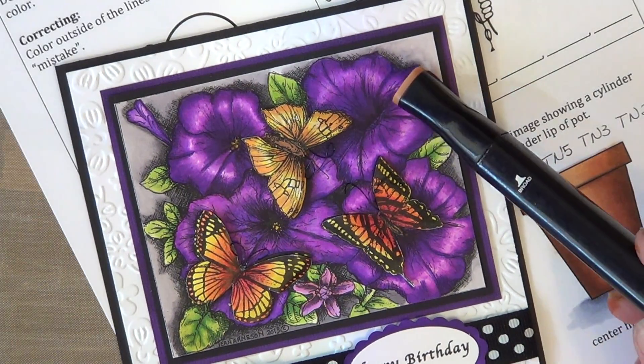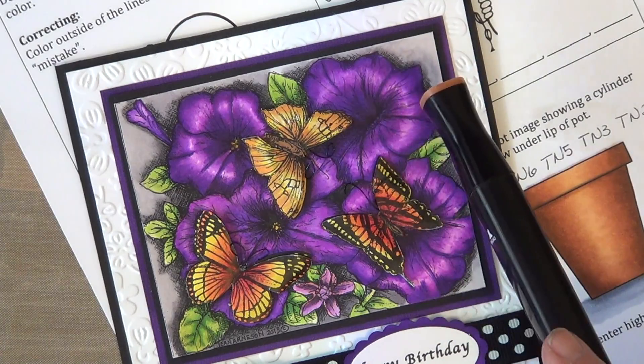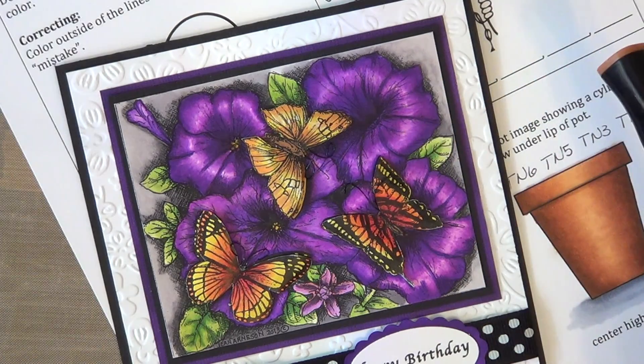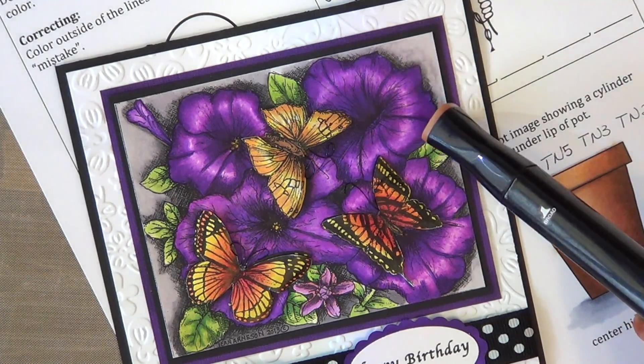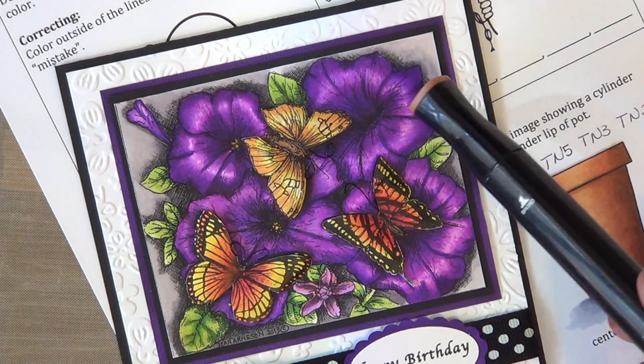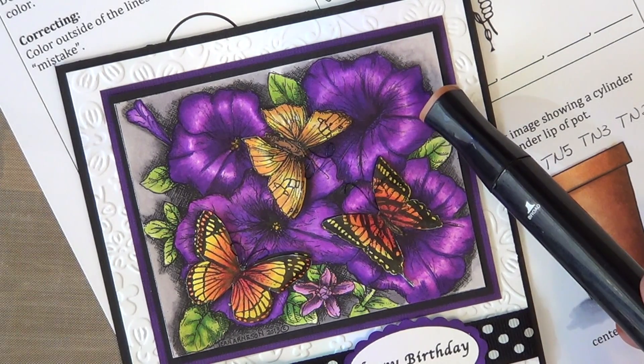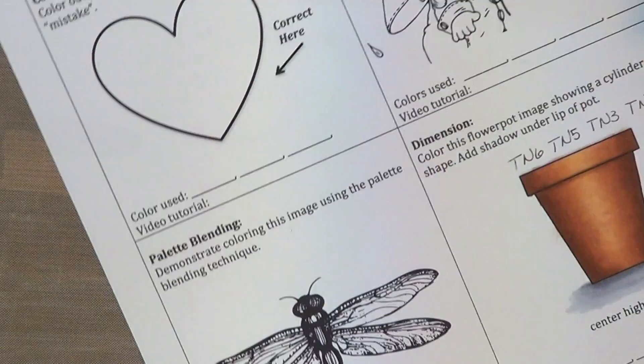What I did is I put my highlight in the center of the curve, making the center look closer to me, and I shaded with darker colors on both of the sides to make them look further away. That's what we're doing here with our flower pot. Let's get started.